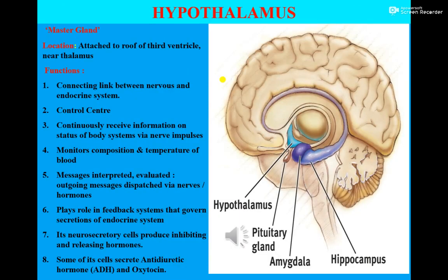Among major endocrine glands, the first gland is the hypothalamus. Hypothalamus is now considered as the master gland of the body. Previously, the pituitary gland was designated as master gland, but now hypothalamus holds that title. Hypothalamus is attached to the roof of the third ventricle near the thalamus.